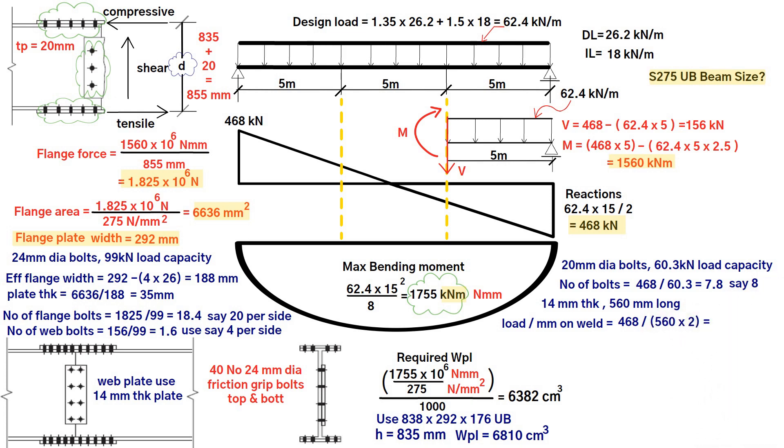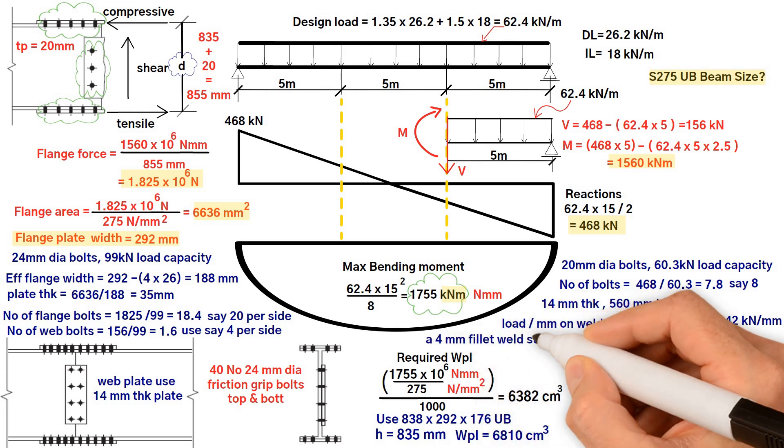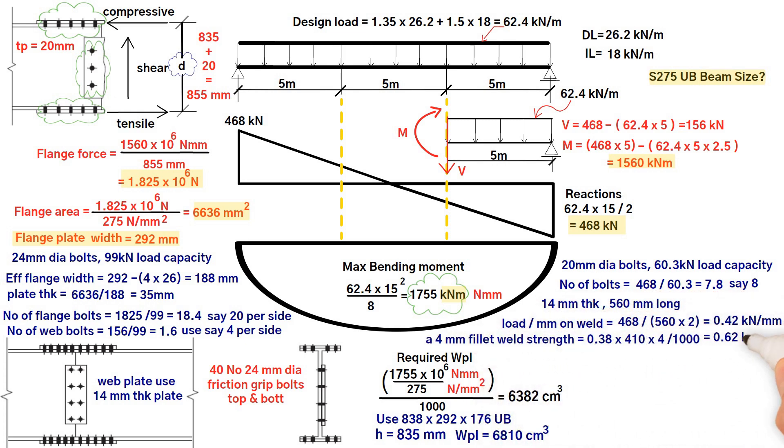times 2, because we are taking into account two sides of the web, which equals 0.42 kilonewtons per millimeter. As a 4 millimeters fillet weld has a strength of 0.62 kilonewton per millimeter and would be suitable.